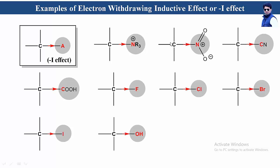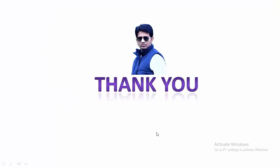Here are some examples of substituents that withdraw electron density from the carbon atom: cyanide, the acidic group, fluorine, chlorine, bromine, iodine, and the hydroxyl group all withdraw electron density from the carbon atom. Thank you friends for watching this video.